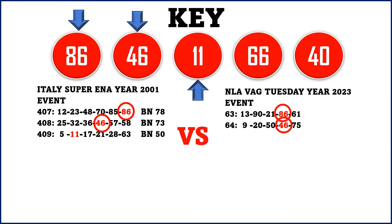The next sequence number is 11. For Super Enalotto results number 409, we have 5, 11, 17, 21, 28, and 63 with BN 50. For the NLA lotto results 65, the numbers drawn were 15, 11, 59, 19, and 57. The number 11 dropped in both lottery systems. Take note: when you find any lottery system that has dropped these three numbers — 86, 46, and 11 — in sequence like this...